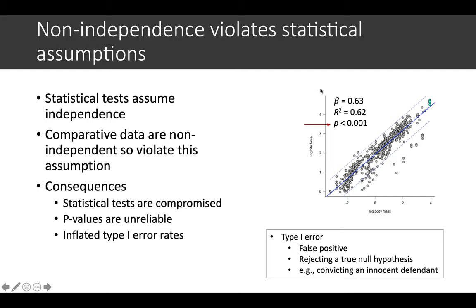For instance, if you have a log bite force against log body mass, you see this relationship. You fit a regression line and calculate confidence intervals, and there's a slope beta value, an R-squared value, and this is the p-value, so that's a very significant relationship between these two variables.